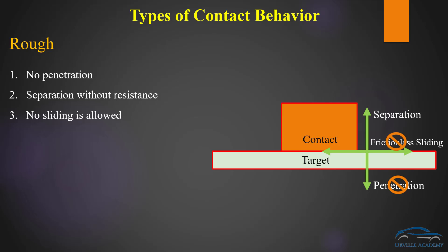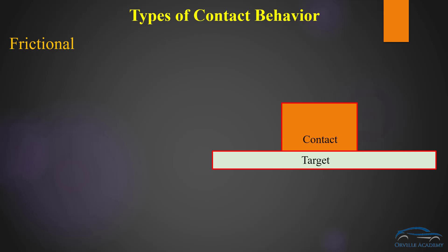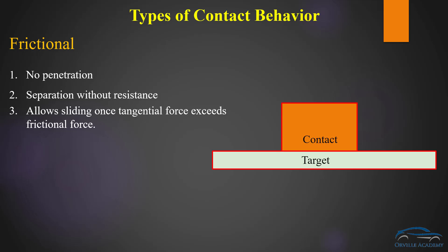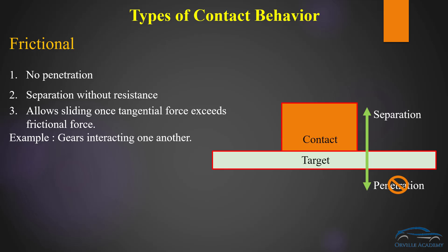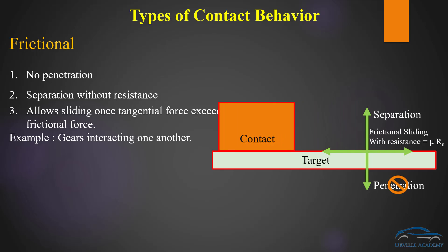The last and most important type of contact is known as frictional contact. About 90% of contacts can be modeled using frictional contact, though it is a little bit more computationally expensive. In case of frictional contact there is no penetration allowed between contact and target surface, but separation can happen without any resistance. The key aspect that separates frictional contact from the rest is sliding: frictional contact allows sliding once the tangential force exceeds the frictional force. A typical example is gears interacting with one another. Graphically, separation is allowed, no penetration is allowed, and the contact surface can slide over the target surface once the tangential force exceeds the frictional force.